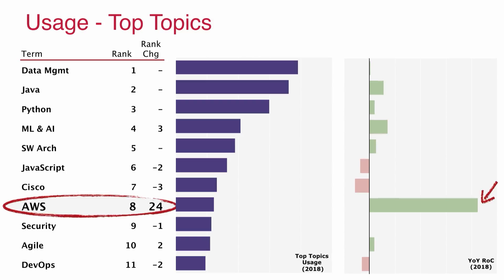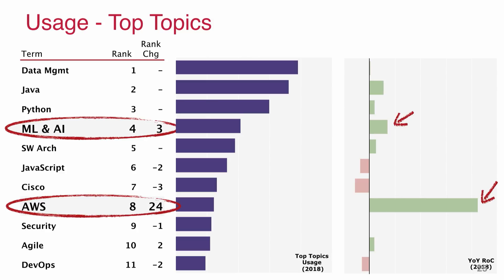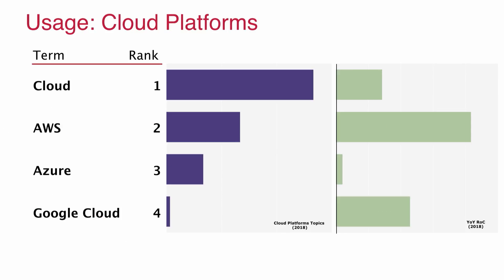When we look at usage for the top topics, we see AWS with big growth and a big increase in interest. Overall cloud topics are up about 70%. AWS, as I mentioned, is up 200%. Azure, which is about half the usage of AWS, isn't growing as fast. And Google Cloud, from a very small base, is growing at about 100% year over year. So the cloud, despite having been around for so long, is really getting a lot more traction with this enterprise-oriented audience.